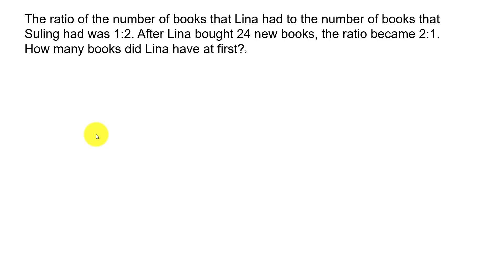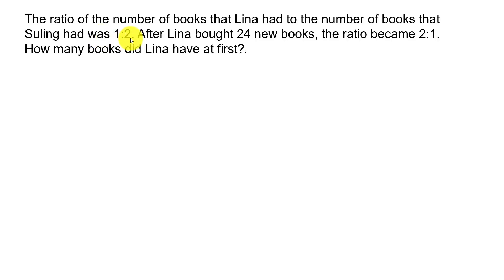Hi everyone, we meet again with a new question raised by one of the subscribers. The question goes like this: the ratio of the number of books that Lena had to the number of books that Su Ling had was 1 is to 2. After Lena bought 24 new books, the ratio became 2 is to 1.